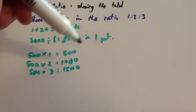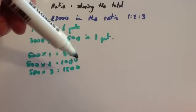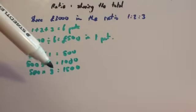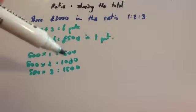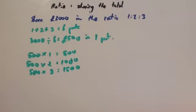So this person would get £500, this person would get £1,000, and this person would get £1,500. And make sure you put your pound signs and so on in your answer section.